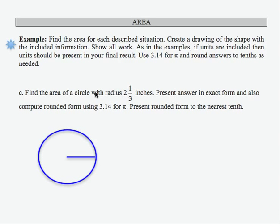In this example, I'm asked to find the area of a circle with radius 2 and 1/3 inches. Present the answer in exact form and also compute rounded form using 3.14 for pi.